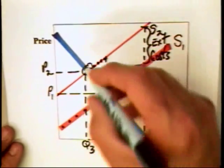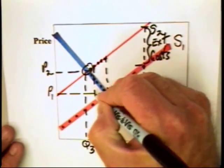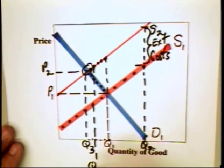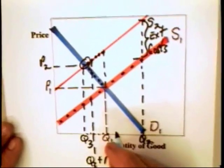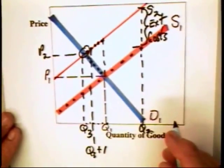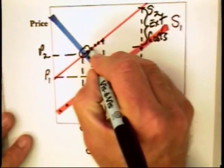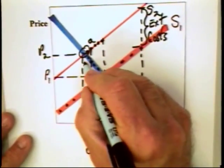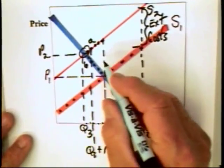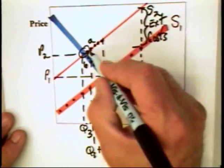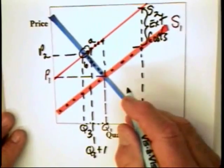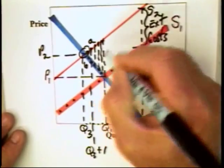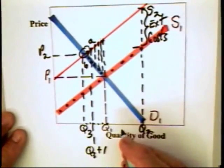We have an inefficiency in the market here because, take this one unit, Q3 plus 1. The additional cost is up here at point A. The additional value is there. The additional cost exceeds the additional value. There is an inefficiency, a waste of resources there. The same is true for this unit, this unit, this unit, all the way up to Q1.